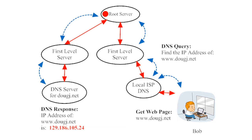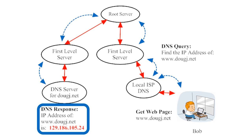A root server is responsible for a tremendous number of domain names. For example, a root server might be responsible for all domain names that end in .com, or all domain names that end in .net. The root server must either know the IP address for all of these domains, or at least know where to find these IP addresses. If the root server doesn't know the IP address for dougj.net, it knows how to route the request so that it makes it to a server that does know. The root server might send the request back down the tree to a different lower-level DNS server, which might eventually send the request to the local DNS server for dougj.net. If this domain name exists, then the local DNS server will definitely know its IP address — in this case, 129.186.105.24.